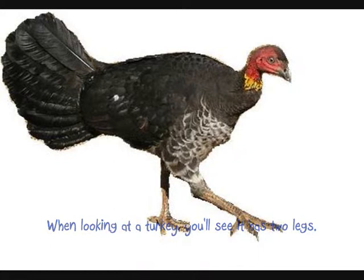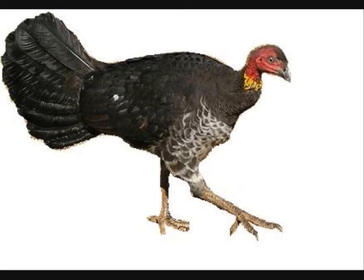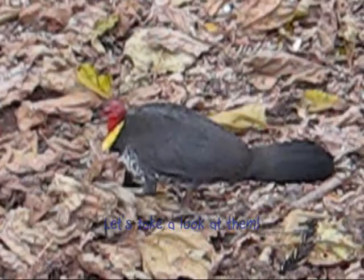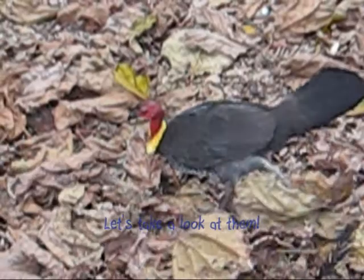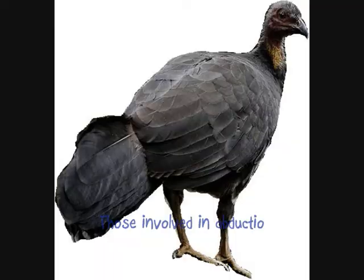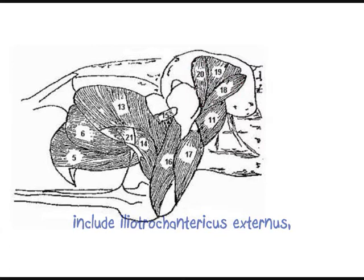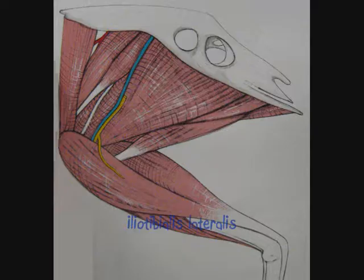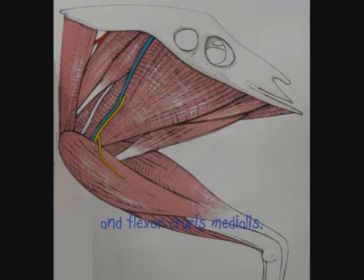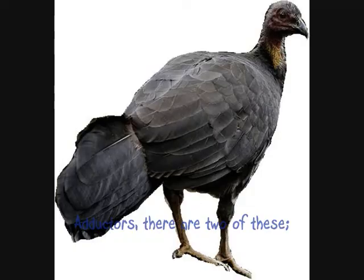When looking at a turkey, you'll see it has its two legs. They're moving lots of ways because of different muscles. Let's take a look at them. Those involved in abduction include iliotrochum, ptericus externus, and also iliotibialis lateralis, and flexicruvis medialis. Adductors — there are two of these.